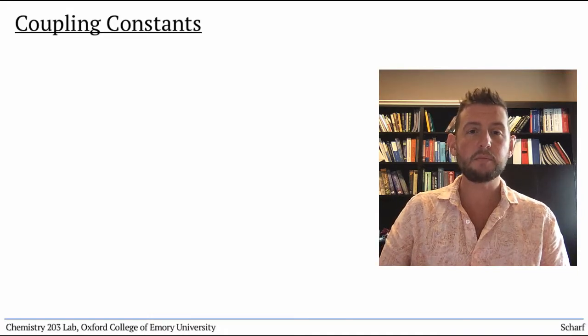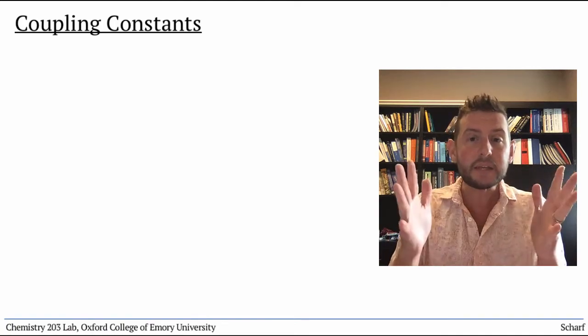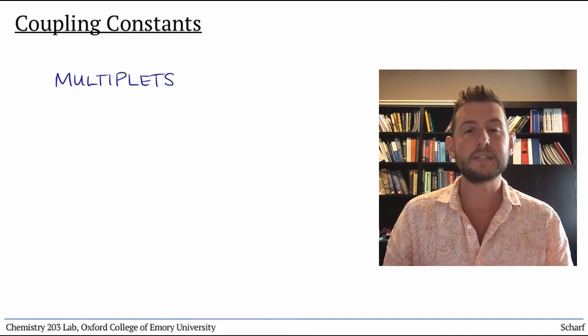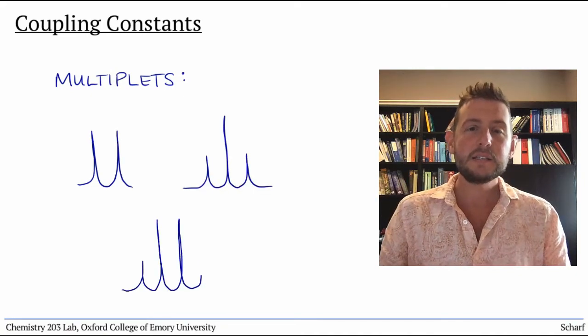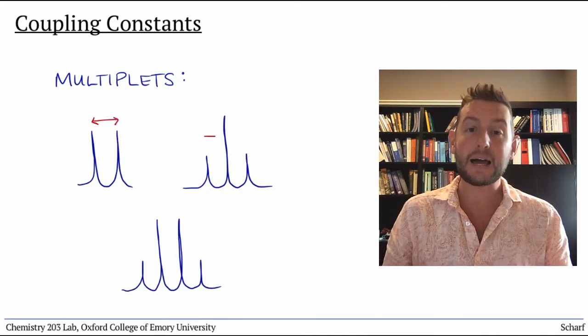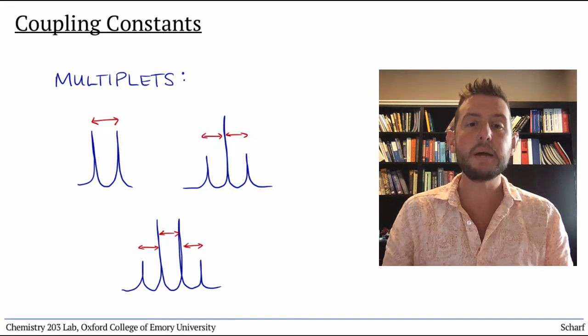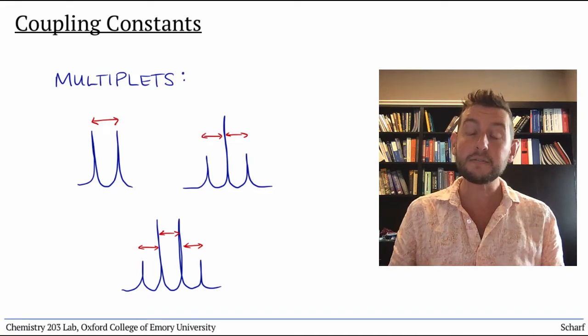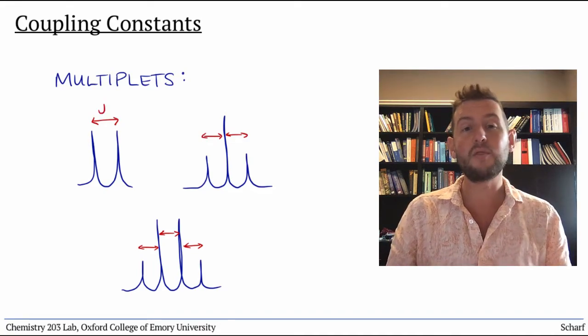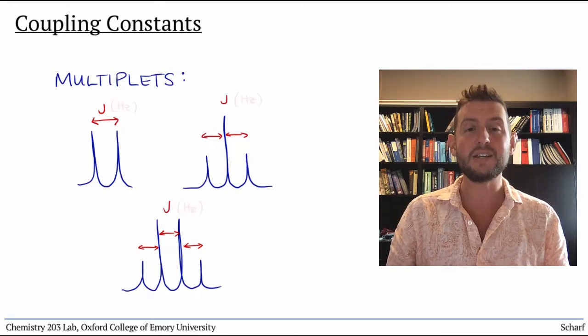Coupling between neighboring protons causes peaks in HNMR spectra to be split into multiplets, little clusters of peaklets. This spacing between the lines of a multiplet, how far apart they are, is a measure of the strength of the coupling interaction and is quantified by a value called the coupling constant, or J value, which is measured in hertz.